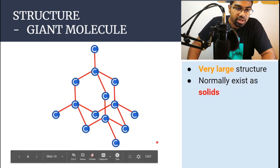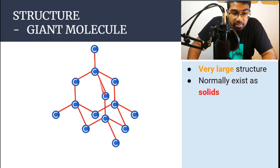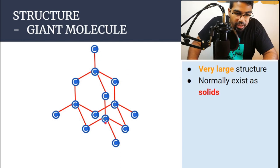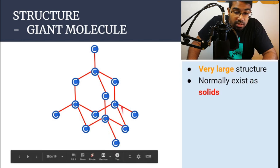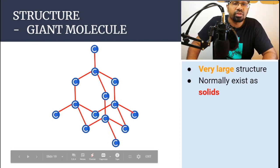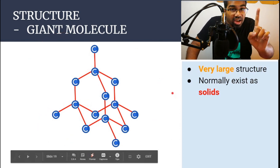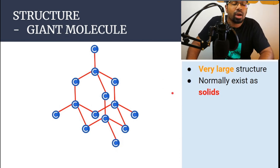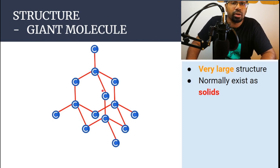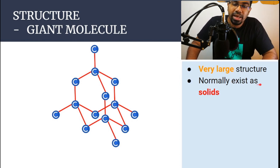Let's compare with a giant molecule. This is an example of a giant covalent molecule — carbon atoms where one carbon atom is bonded to four neighboring carbon atoms, and this is true for all the carbon atoms except those at the edge. This bonding is covalent bonding, and it goes on and on until the whole thing forms one giant molecule — a single molecule where all the carbon atoms are joined by covalent bonds. This is called a giant structure, it is very large, made of millions of atoms, and it normally exists as a solid.